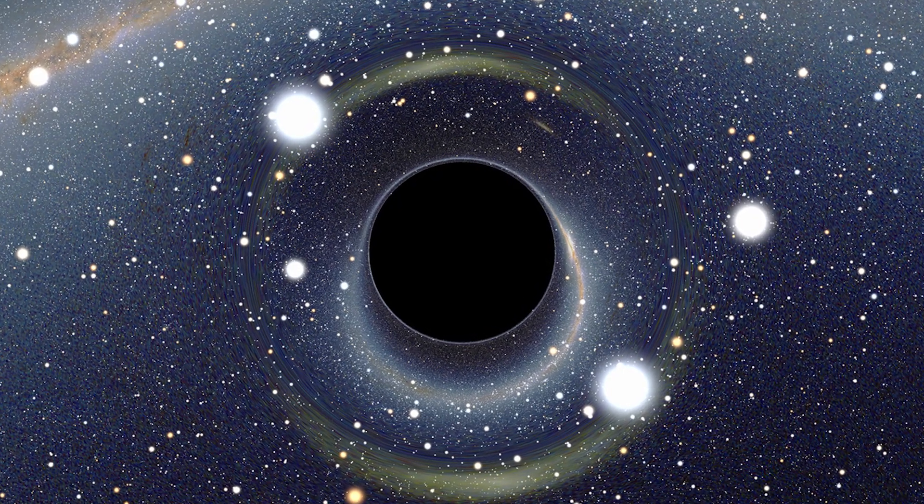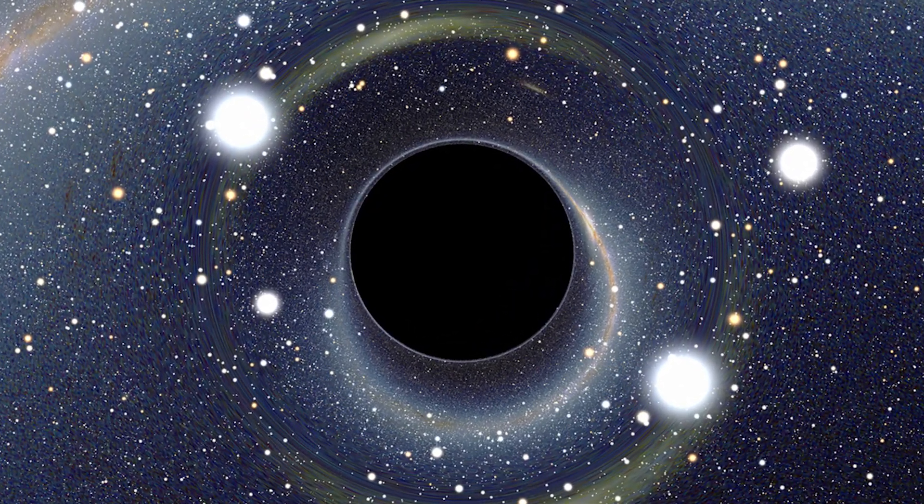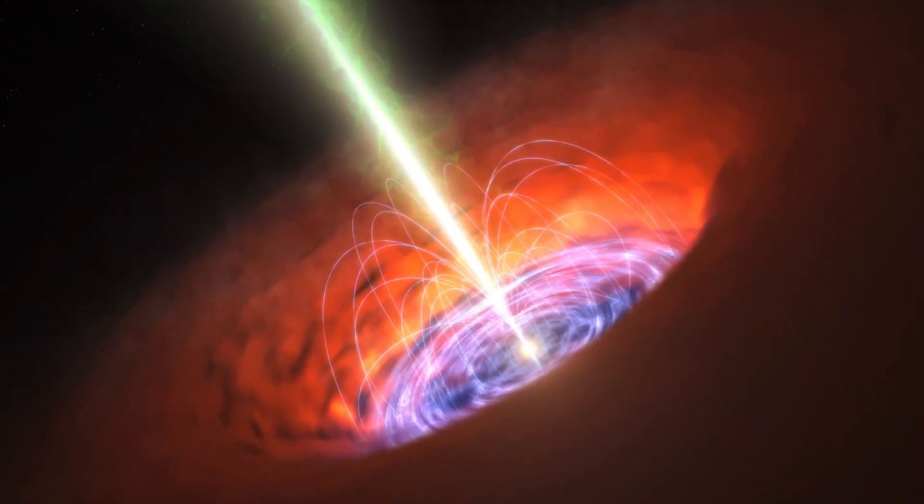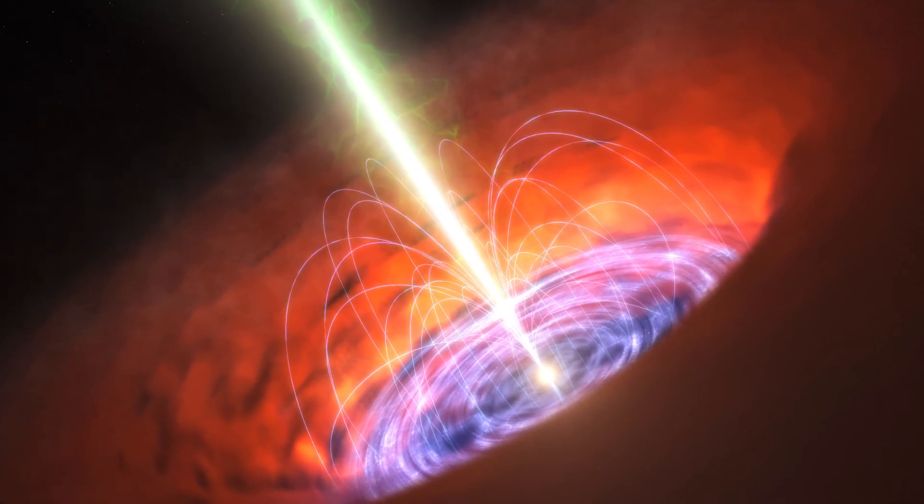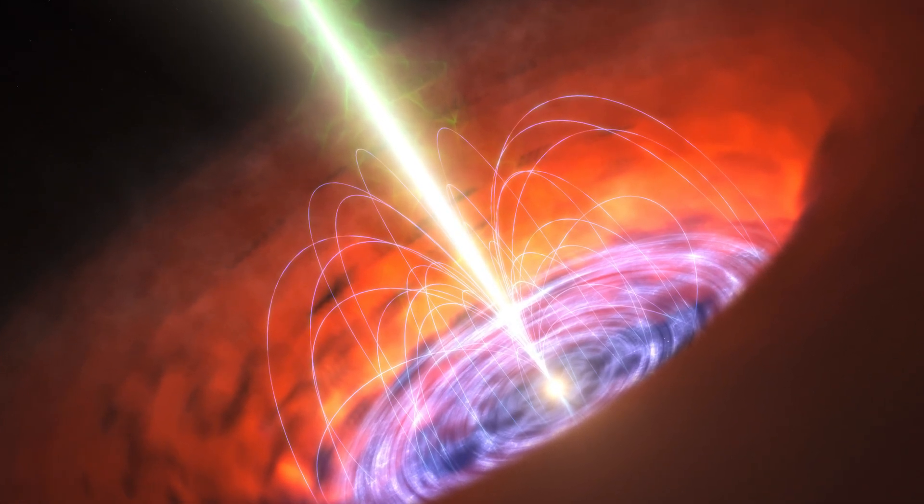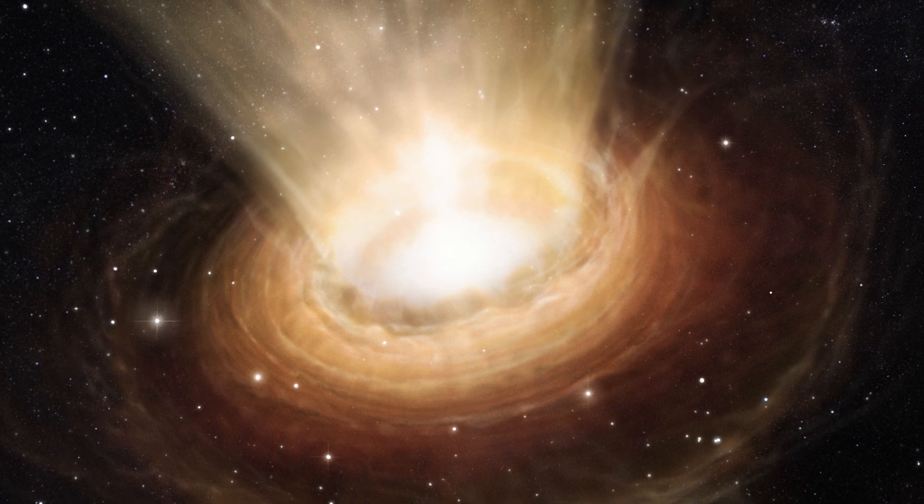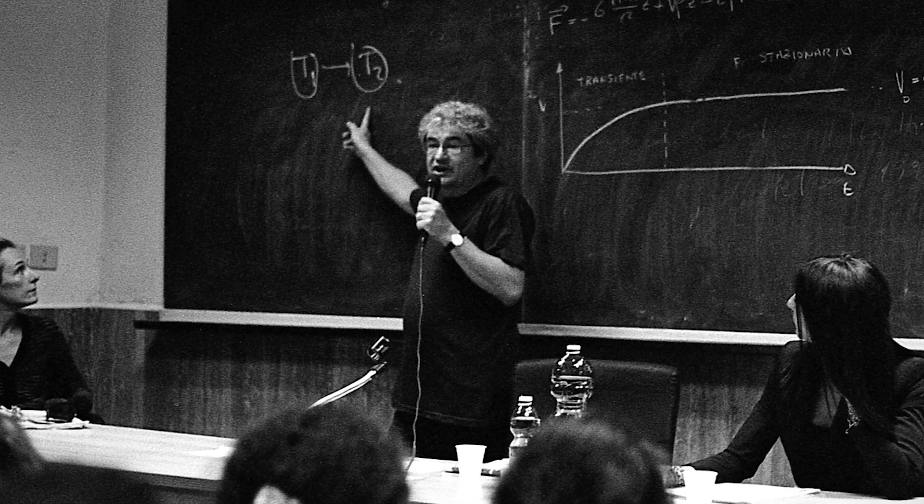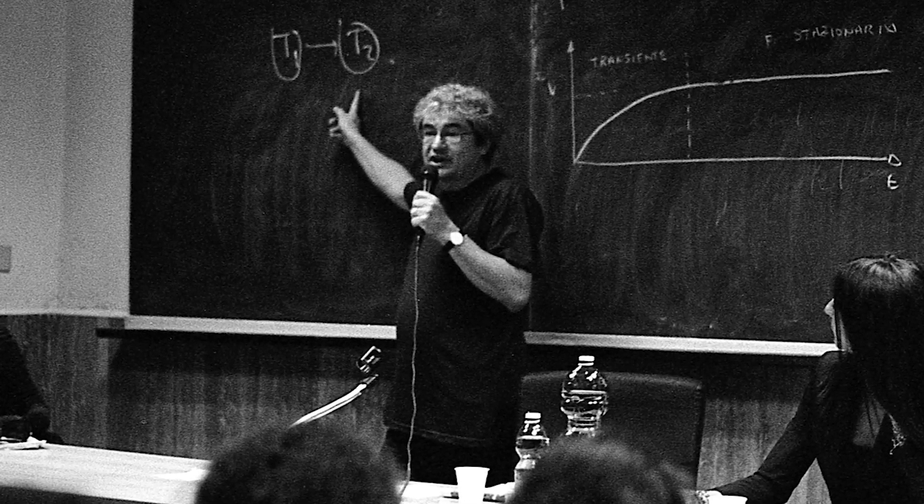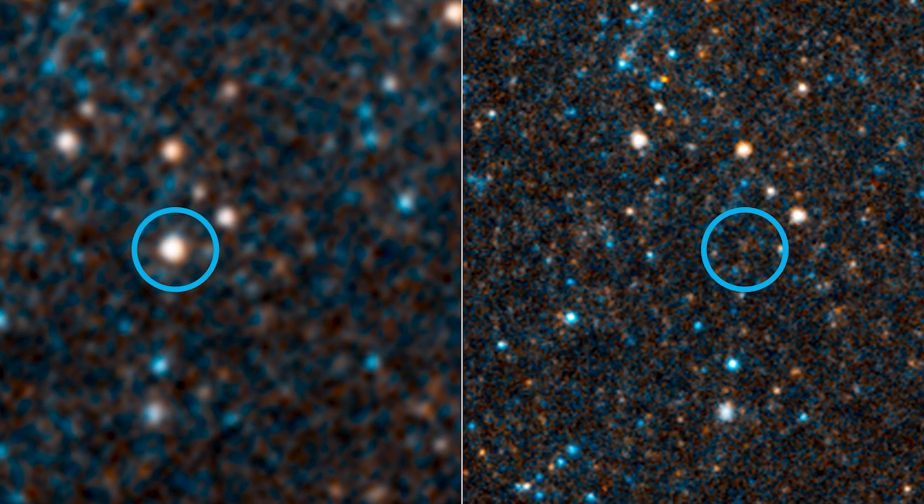However, Rovelli and his co-workers' proposed method of a black hole's eventual transformation into a white hole is very slow. According to Rovelli's calculations, the age of the universe would have to increase by a factor of nearly a quadrillion before a black hole with the mass of the sun would be converted into a white hole. Even more importantly, this hypothesis argues that unlike black holes which emerge from the collapse of dying stars, white holes cannot be formed directly.